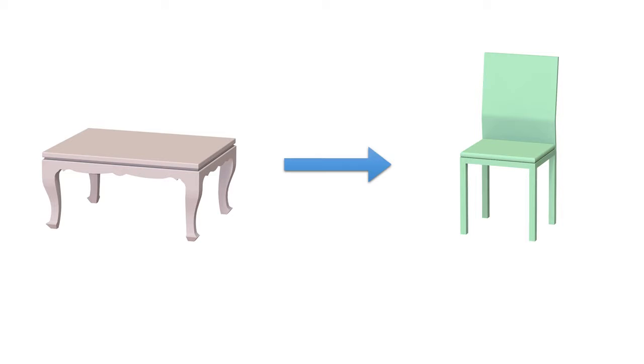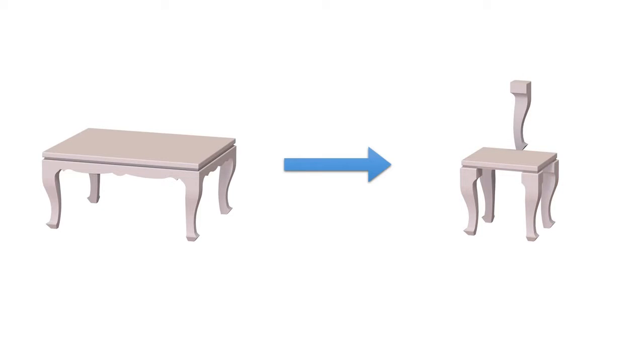Unconstrained element edits can easily break the functionality of the target shape. For example, transferring the style of the exemplar table to the target chair without constraints yields a dysfunctional chair.